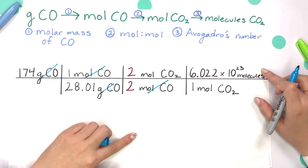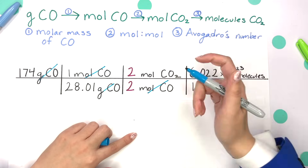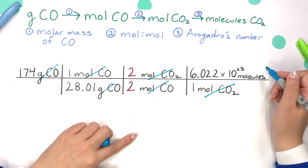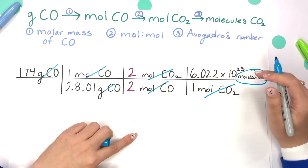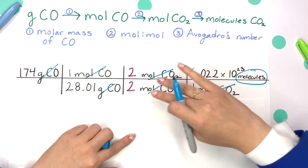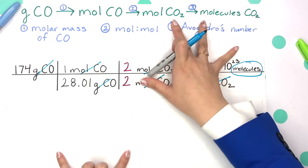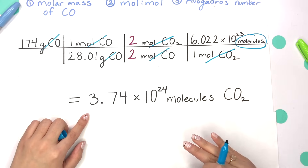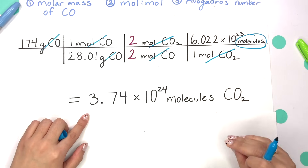Then we want to cancel out our moles of CO2 to get to molecules of CO2. Using Avogadro's number on top, the moles of carbon dioxide cancel and we're left with molecules of CO2. Multiply straight across and divide, and you get 3.74 × 10²⁴ molecules of CO2.